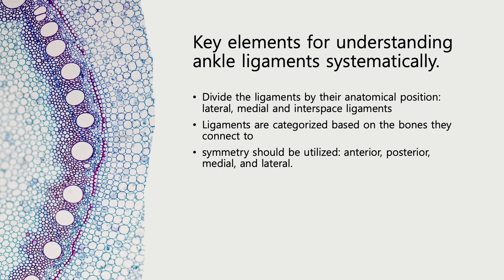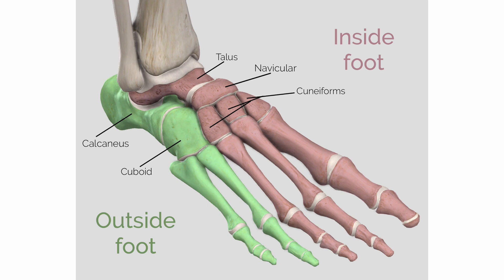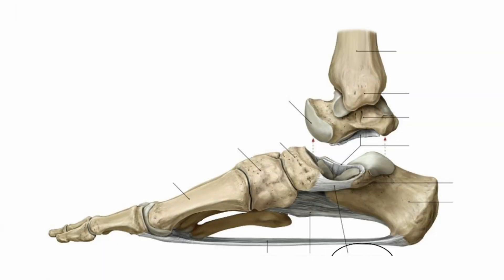Second, the ligaments are categorized based on the bones they connect to. For the lateral ankle, where the lateral malleolus is a crucial structure, there are four major bones: fibula, talus, calcaneus, and cuboid. The links between them include fibula to talus, fibula to calcaneus, talus to calcaneus, and calcaneus to the cuboid bone. For the medial ankle, the medial malleolus serves as the core landmark. Here, the major bones are the tibia, talus, calcaneus, and navicular bone, with links from the tibia to talus, tibia to calcaneus, tibia to navicular bone, talus to calcaneus, and calcaneus to navicular bone.